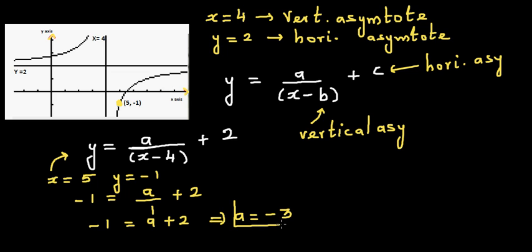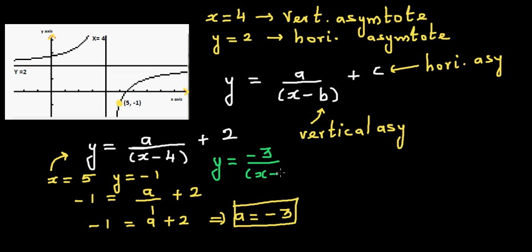Now we need to confirm whether the equation is right. The final equation is: y = −3 / (x − 4) + 2.